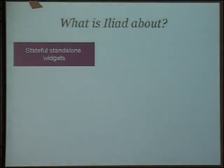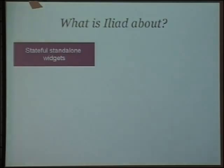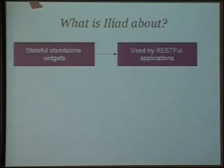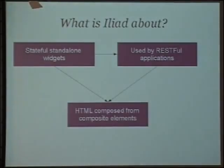So how does Iliad work? Iliad has three layers. The first one, the top one, is stateful standalone widgets. Widgets are graphical components, very similar to Seaside components. They have decorators, like in Seaside, and there is a kind of callbacks using block closures. On top of that, we have RESTful applications. Applications are also graphical objects, but they know how to dispatch requests. So on one side we have stateful objects, on the other side we have RESTful applications.